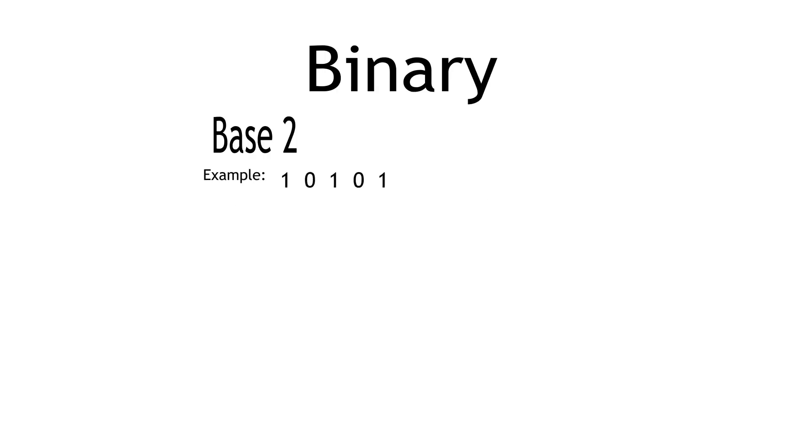Take the binary number 10101, for example. Reading from right to left, we start with our base to the power of 0 multiplied by its respective coefficient, that is, 2 to the 0 times 1.